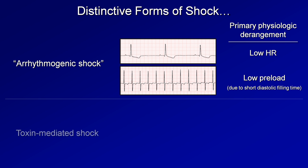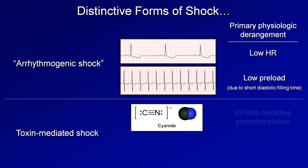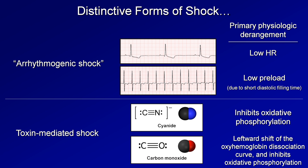The other distinctive form is toxin-mediated shock. For example, in cyanide poisoning, there is inhibition of oxidative phosphorylation. As a consequence, the body cannot perform aerobic respiration, becomes systemically oxygen-starved, and switches to anaerobic respiration resulting in severe lactic acidosis. There is also carbon monoxide poisoning, in which a leftward shift of the oxyhemoglobin dissociation curve prevents offloading of oxygen in peripheral tissues, in addition to inhibition of oxidative phosphorylation. Arrhythmogenic and toxin-mediated shock can lead to many of the same features as the four classic types of shock, but their presentations and treatments are different enough that they form their own separate category.